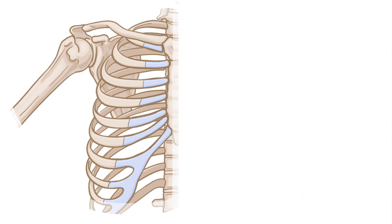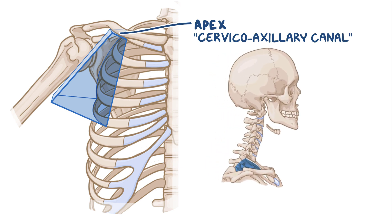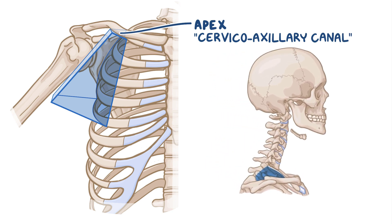The axilla is shaped like a pyramid that has an apex, a base, and four walls. The apex of the axilla is also called the cervicoaxillary canal, which is the door between the neck and the axilla. The cervicoaxillary canal is bounded by the first rib, clavicle, and superior edge of the scapula.